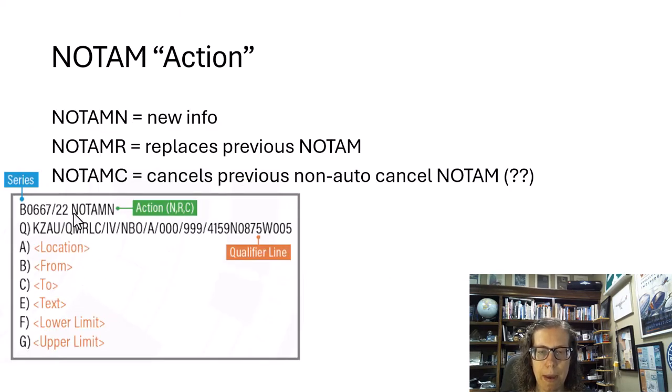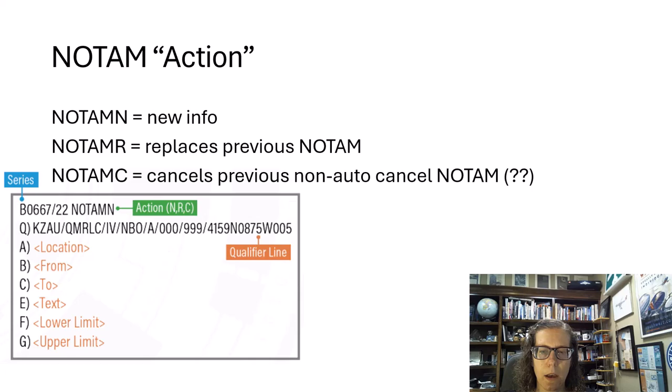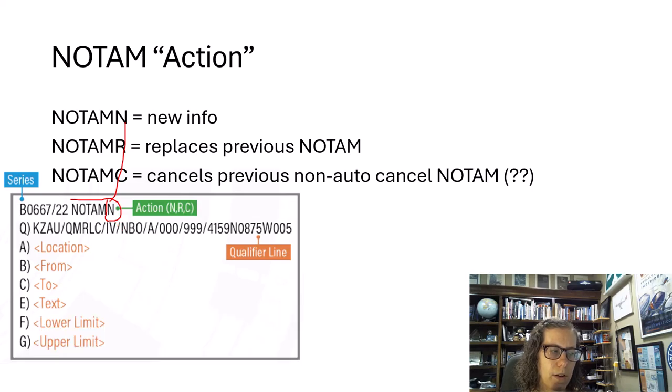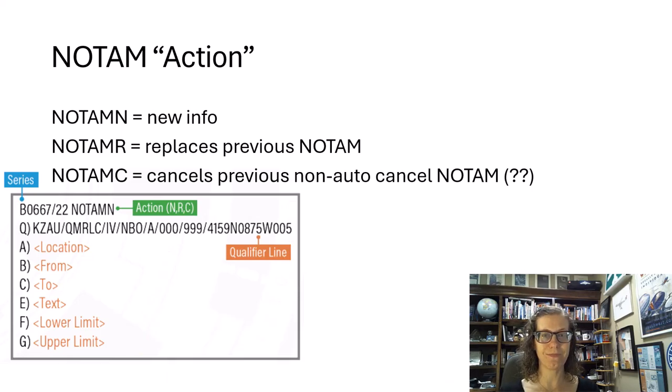Next you have what I mentioned, the NOTAM action. The numbering I believe is going to be similar to the FAA's current numbering system. The next part is the action, and so this one ends with the letter N meaning it's new, it's a new piece of information. I found many NOTAMs that were the NOTAM R replacing a previous NOTAM. What I did not find really was any of these NOTAM C canceling previous non-auto cancel NOTAM. I have no idea what that means.